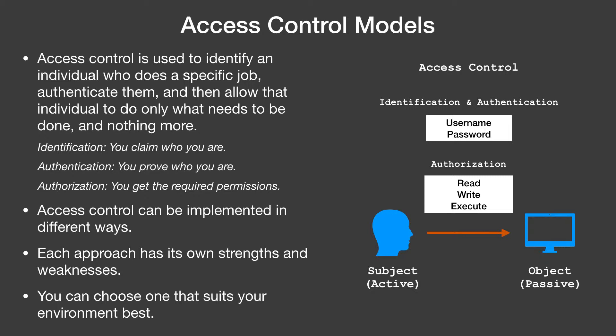Identification is when you claim who you are. Authentication is when you prove who you are. Authorization is when you get the required permissions. On a computer or network, your access is controlled in a similar fashion. Your username is used for identification, your password is used for authentication, and once you are authenticated, the computer can refer to some sort of access control list to know what activities you are allowed to do and what you are not — and that's what we call authorization.